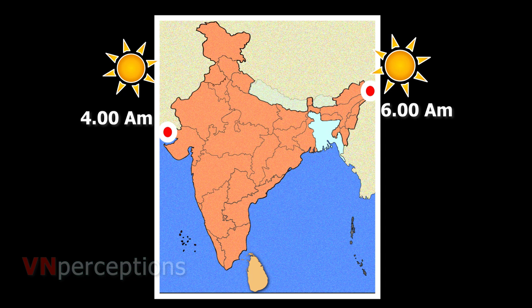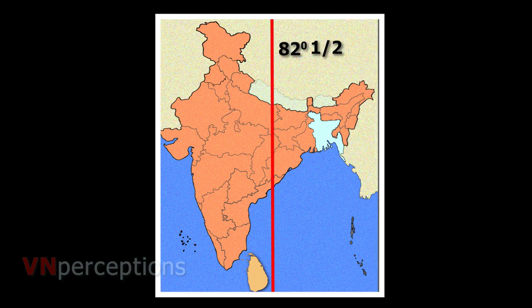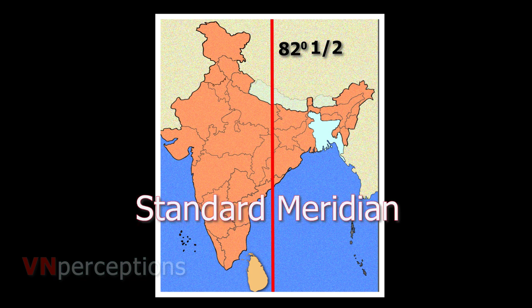The standard meridian of India is 82 and a half degrees. If the entire country follows local time, it will be different at different places and this would lead to confusion. So we have a standard time and also a standard meridian, which is 82 and a half degrees east passing through Allahabad. In this way, all countries have their standard times. Many countries that are big in size have multiple standard times.